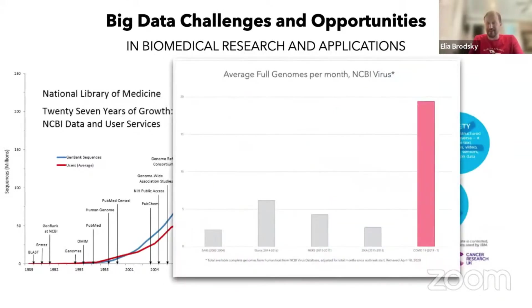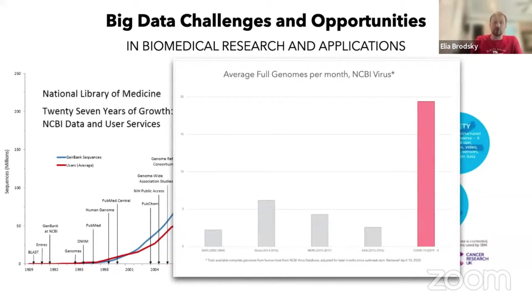One of the examples is the current pandemic, which has produced such a tremendous amount of data that today, when you speak about mutations, variants, and sequencing, everyone knows these terms — not just people who specialize in that domain. This shows not only an example of how data is generated, but also the trajectory of how this data will continue to be generated in the future.